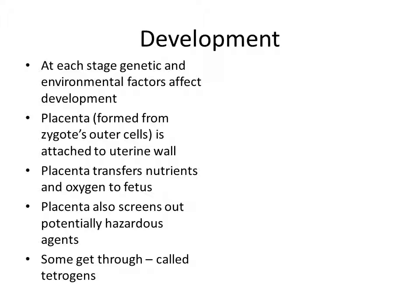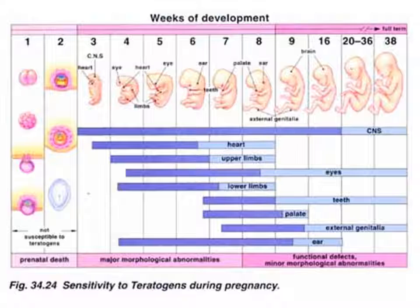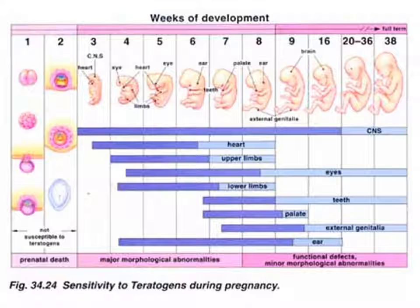Genetic and environmental factors affect development. The placenta, formed from the zygote's outer cells, attaches to the uterine wall and transfers nutrients and oxygen to the fetus. The placenta is also supposed to screen out potentially hazardous agents — it does a great job, but sometimes they get through. Those harmful materials are called teratogens.